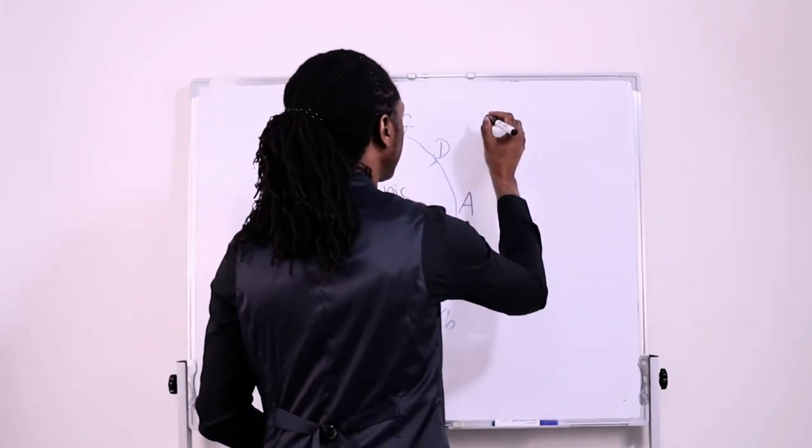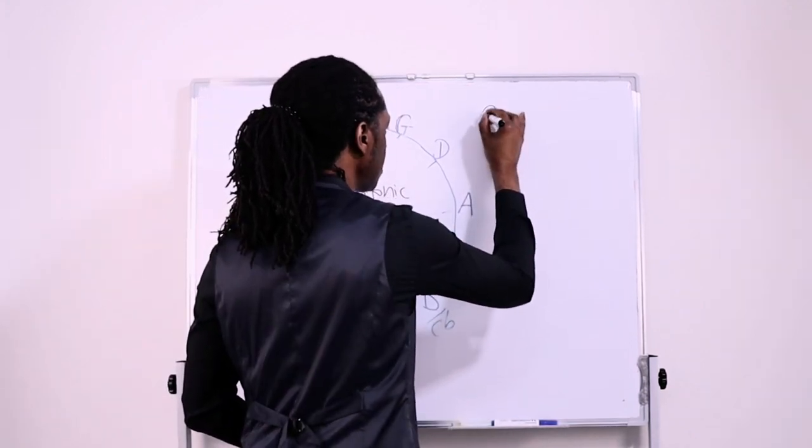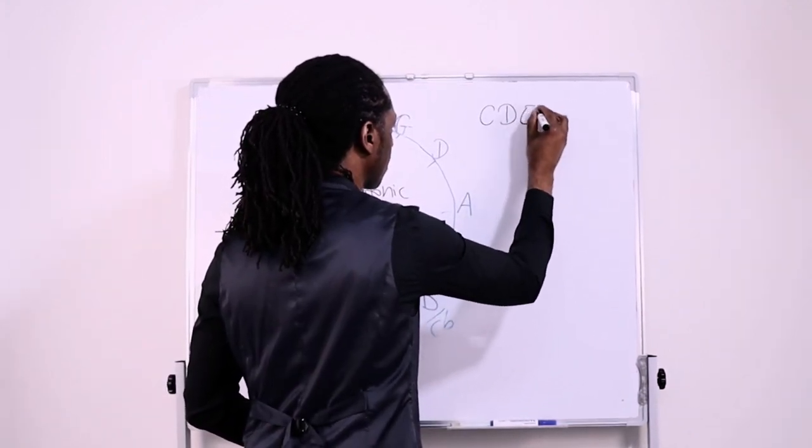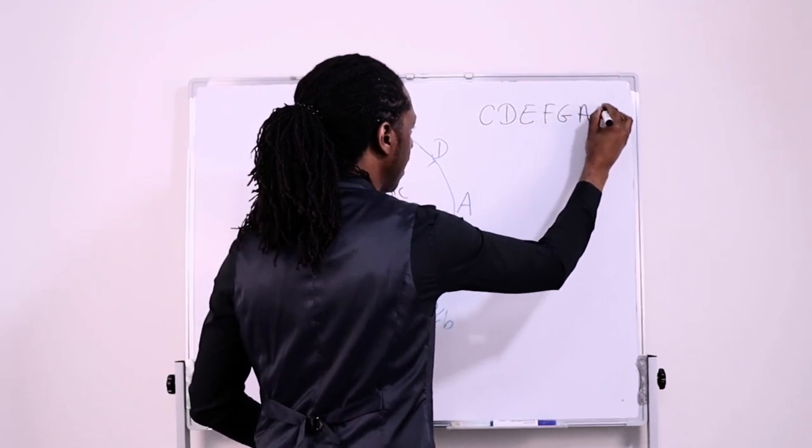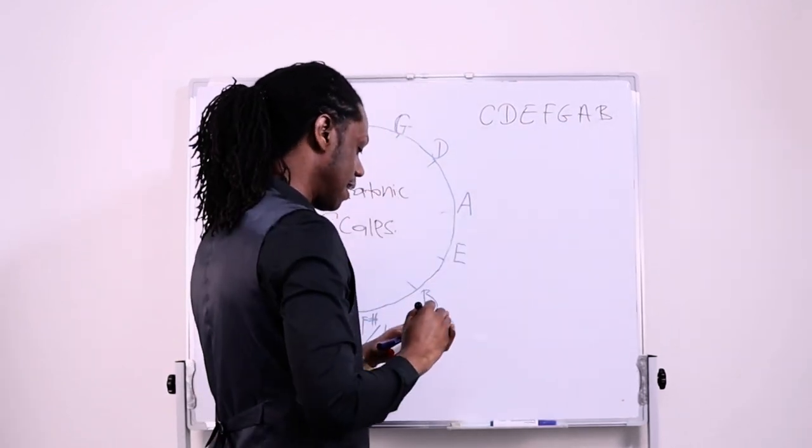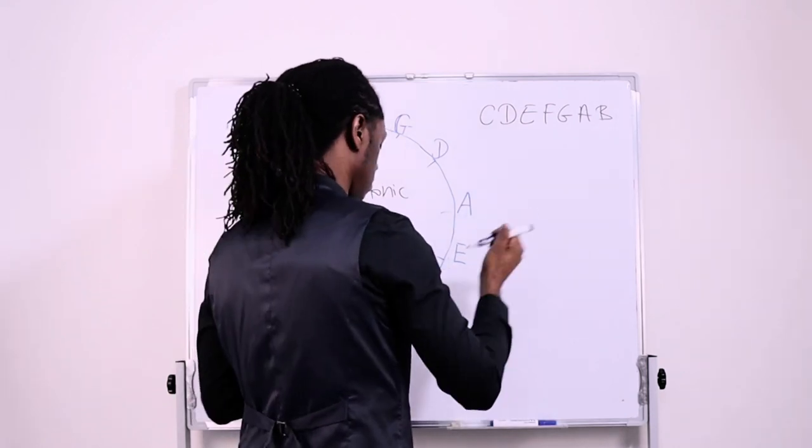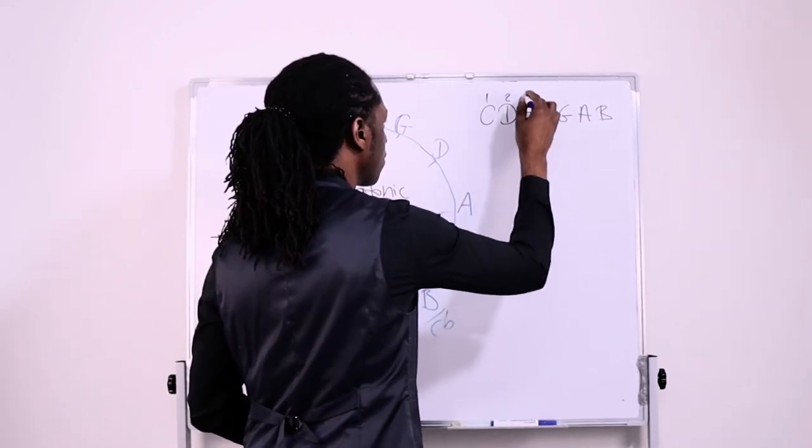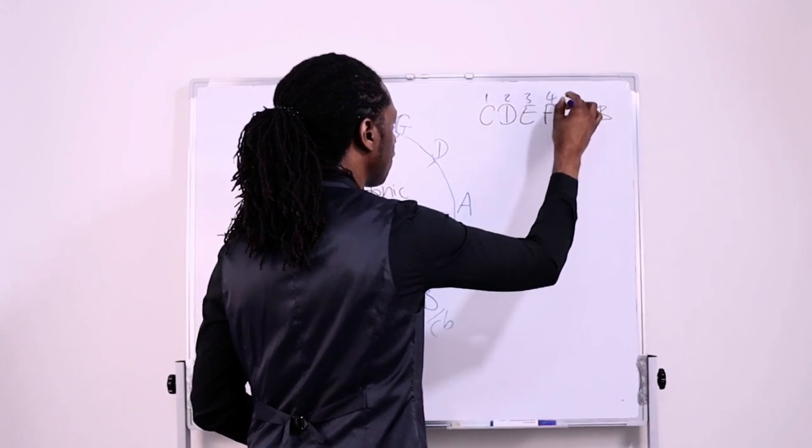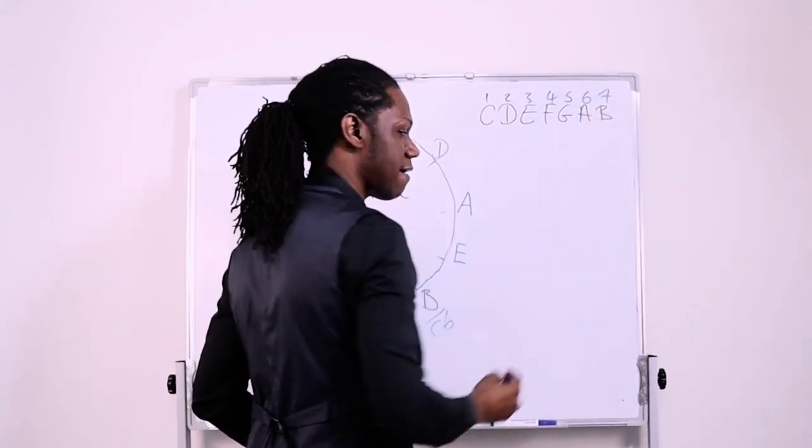So there are a few ways you can use to learn your pentatonic scales or the notes within the pentatonic scales. The first way is by making a major scale. So let's use C, D, E, F, G, A, and B. And then I am also going to label the degrees: one, two, three, four, five, six, seven.